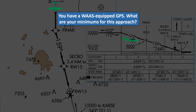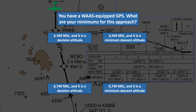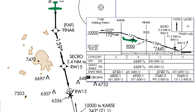Question 4: You have a WAAS-equipped GPS. What are your minimums for this approach? 6,569 MSL as a decision altitude, 6,569 MSL as a minimum descent altitude, 6,740 MSL as a decision altitude, or 6,740 MSL as a minimum descent altitude? The answer is 6,569 as a decision altitude. A WAAS-enabled GPS allows us to fly a localizer performance with vertical guidance approach, or LPV. This gives us a minimum of 6,569 for all category aircraft, which is a decision altitude — we'll be following a glide slope down, similar to how we fly an ILS approach.